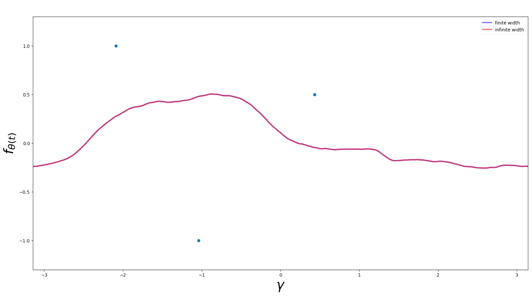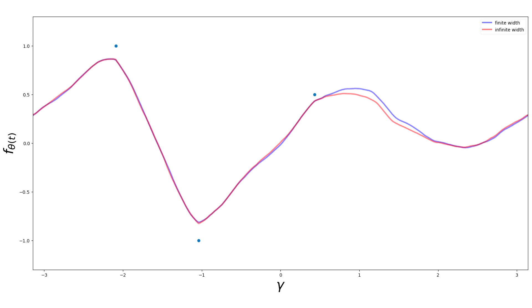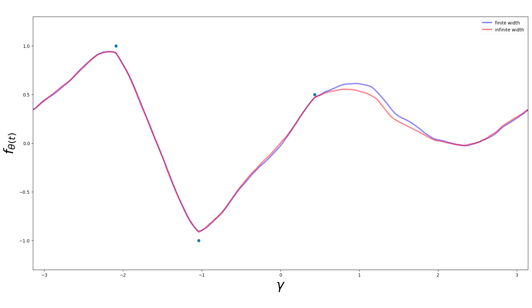Even for a network of finite width, we can predict the trajectory of f theta given its initialization by approximating it with kernel gradient descent with the limiting kernel.